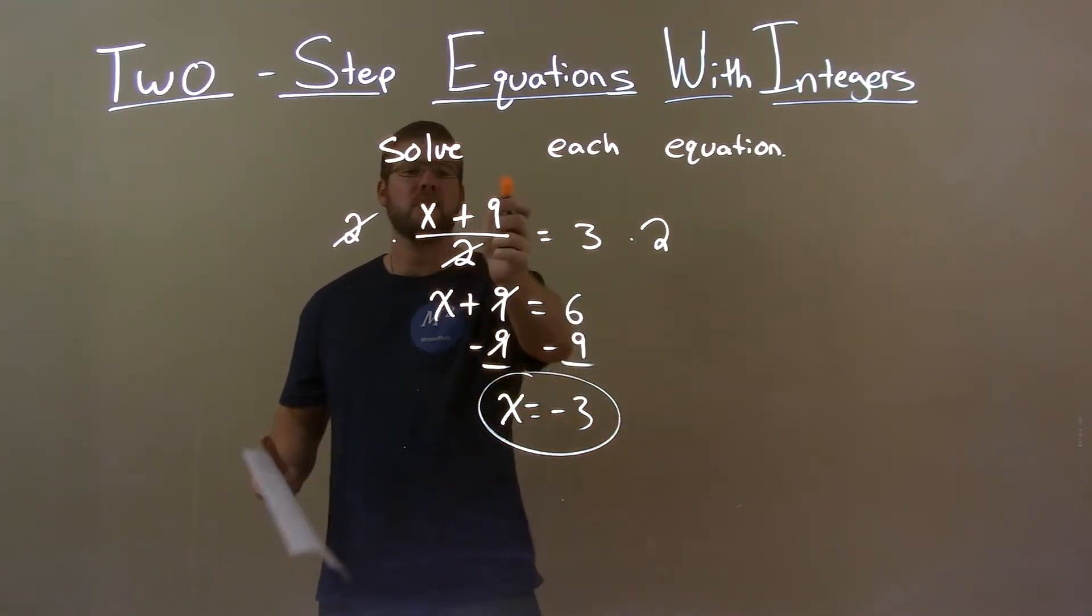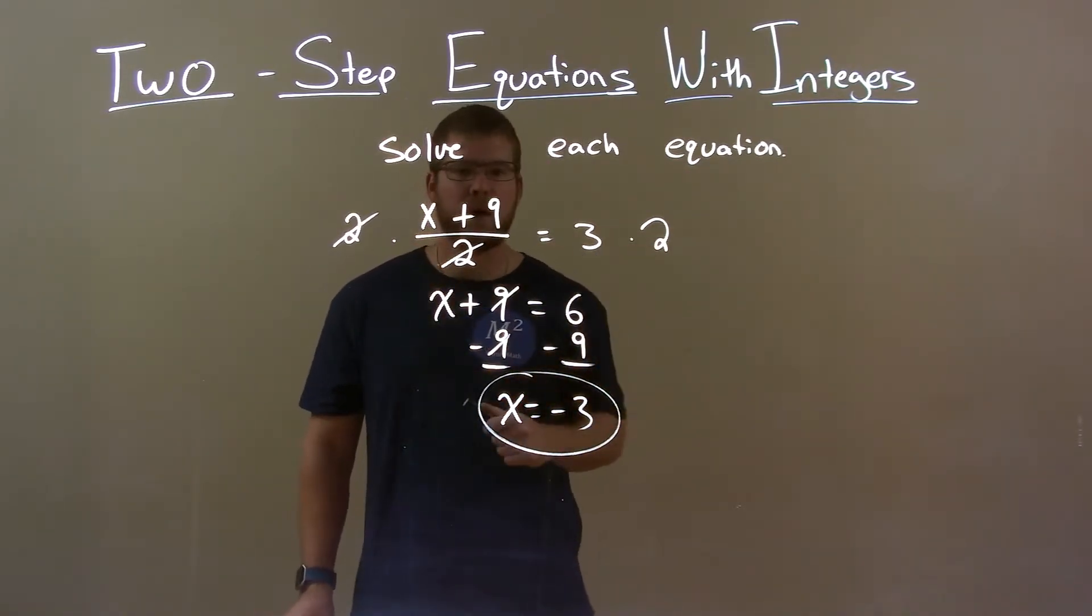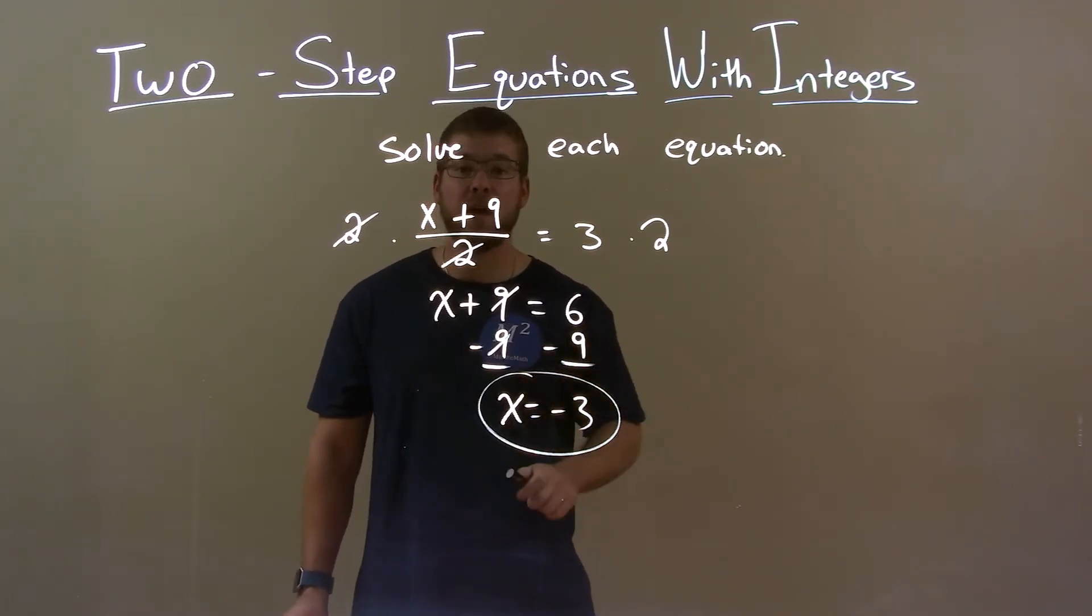Quick recap, we're given x plus 9 over 2 equals 3 and we have to solve for x. Multiply 2 to both sides, then I subtract 9 from both sides. That got me my final answer, x equals negative 3.